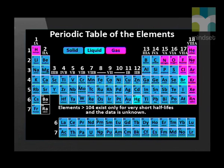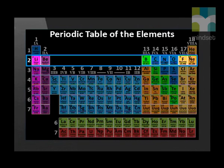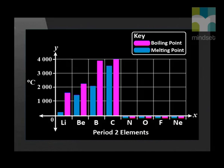This image shows us that except for mercury and bromine, which are liquid at room temperature, the elements to the left of the table are solids. The elements to the right are gases at room temperature. We will now focus on the melting and boiling points of elements in period 2. As you can see from this graph, the melting point and the boiling point increases from lithium to carbon across period 2.